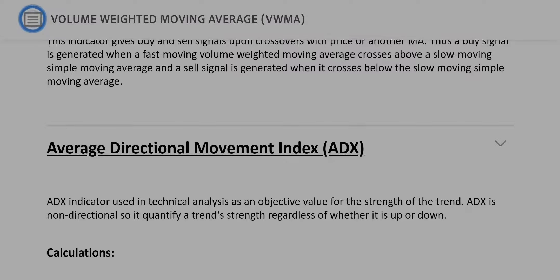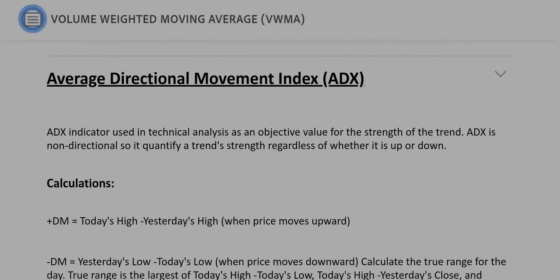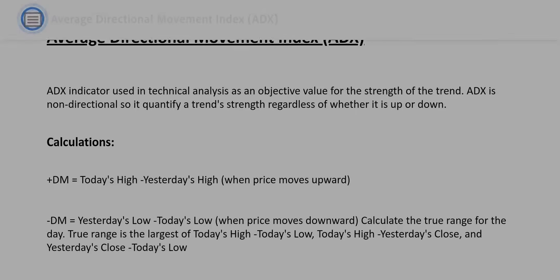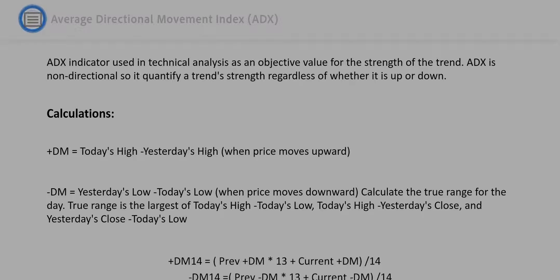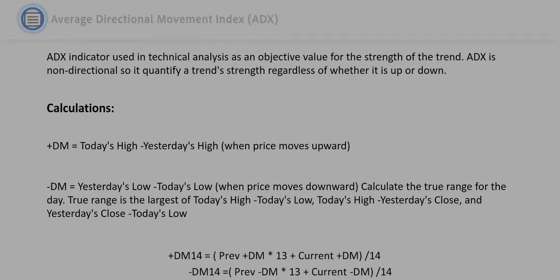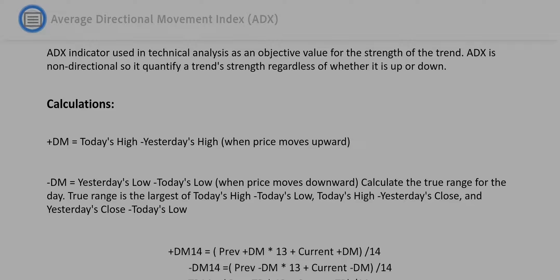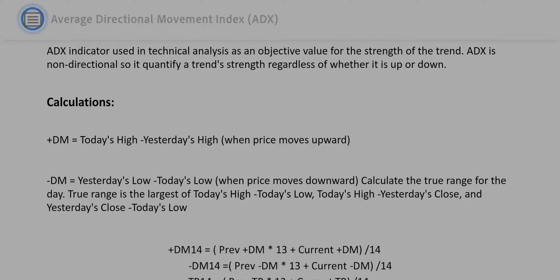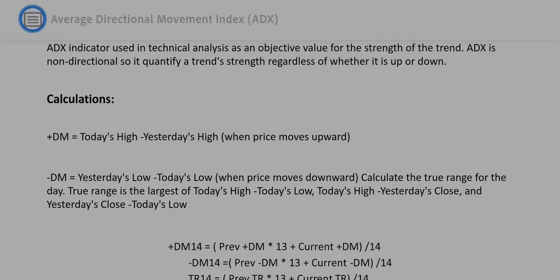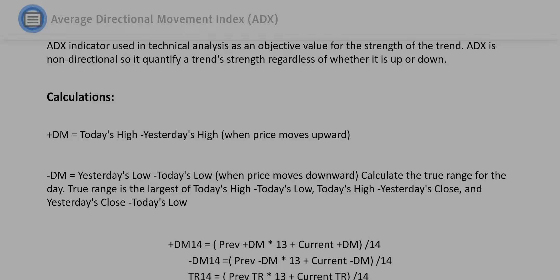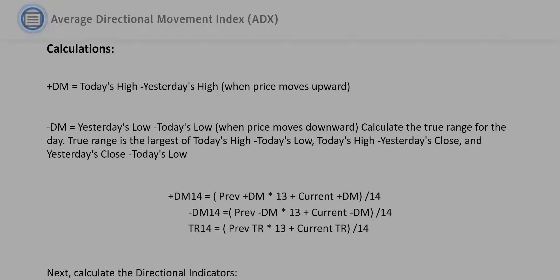Average Directional Movement Index, or ADX. The ADX indicator used in technical analysis is an objective value for the strength of the trend. ADX is non-directional, so it quantifies a trend's strength regardless of whether it is up or down.